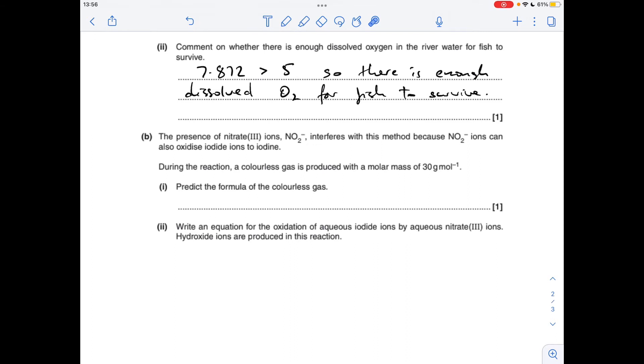Next thing, we've just got to make a comment on whether there's enough dissolved oxygen in the river water for the fish to survive. Well, the answer is yes, because the 7.872 milligrams per decimeter cubed we've just calculated is greater than 5, which is the limit, and so therefore there is enough.